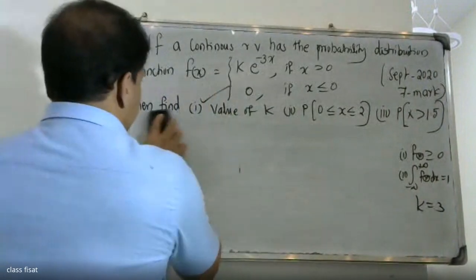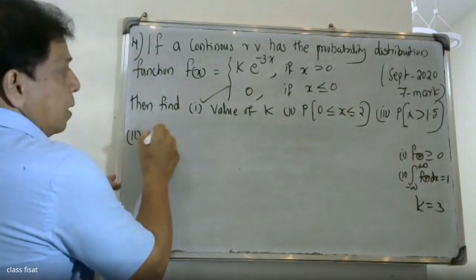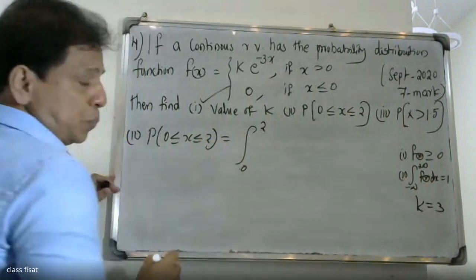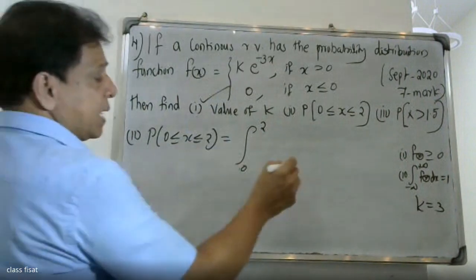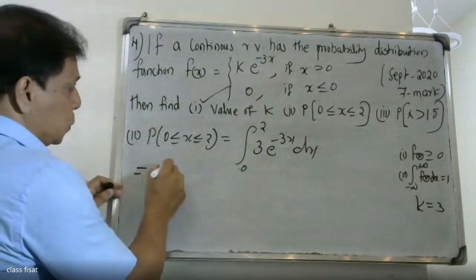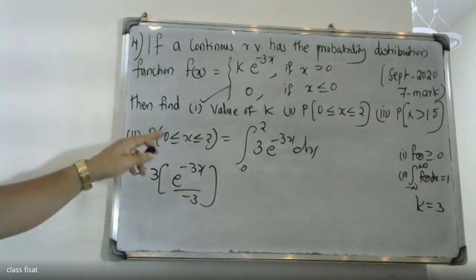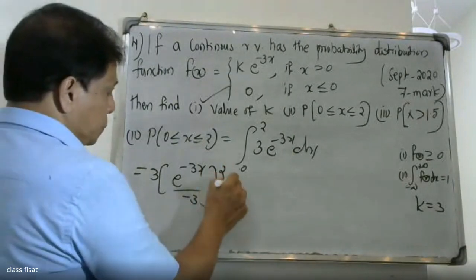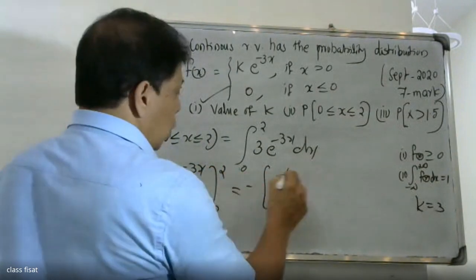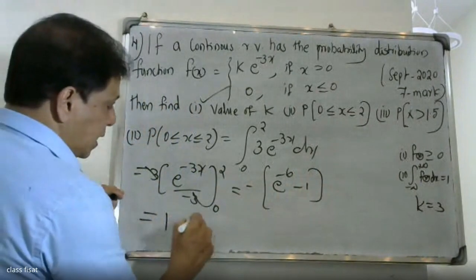For the second part, probability of 0 ≤ x ≤ 2: we integrate f(x) from 0 to 2. With k = 3, this is the integral from 0 to 2 of 3·e^(−3x) dx, which equals 3 · [e^(−3x) / (−3)] from 0 to 2, simplifying to −[e^(−6) − e^0] = 1 − e^(−6).